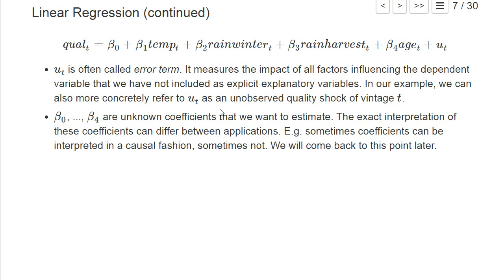The exact interpretation of these coefficients can differ between applications. In particular, sometimes we can interpret them in a causal fashion. So we could say beta one measures by how much one degree higher temperature influences or causally affects the quality of the wine.